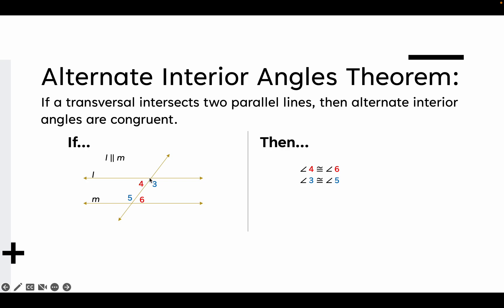So this means that angle 4 has to be congruent to angle 6. Angle 4 is congruent to angle 6. Likewise, angle 5 and angle 3 are both alternate interior angles, which makes them congruent as well.